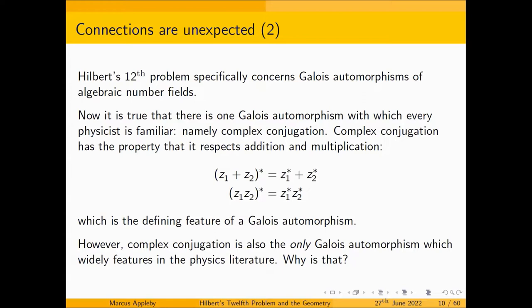There's another reason. Hilbert's 12th problem is specifically concerned with Galois automorphisms of number fields. There's one Galois automorphism which every physicist is familiar with, and that's complex conjugation, which has the property that it respects addition and multiplication — you take the conjugate of a sum and get the sum of the conjugates, and the conjugate of a product gives the product of the conjugates. That's actually the defining feature of a Galois automorphism: a map of a number field to itself, a bijection, which has this property.